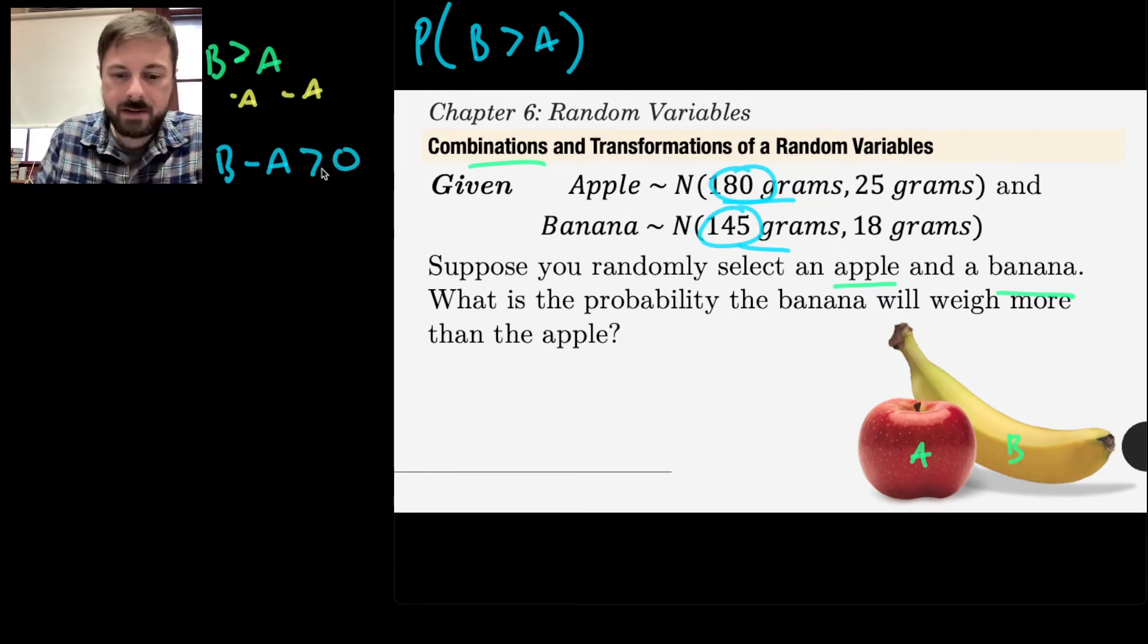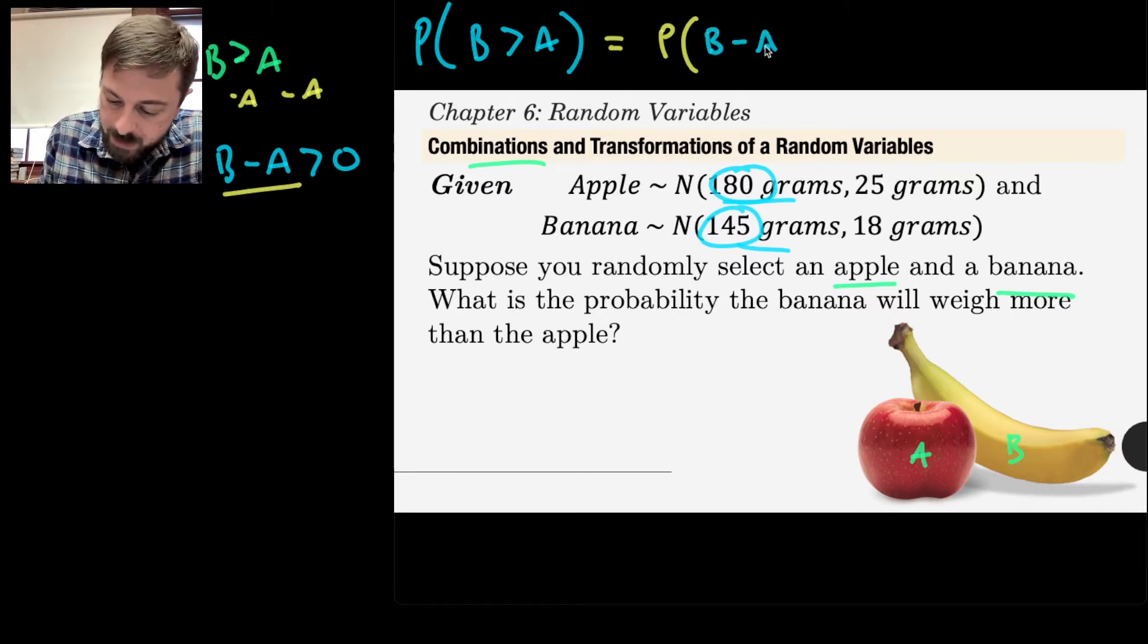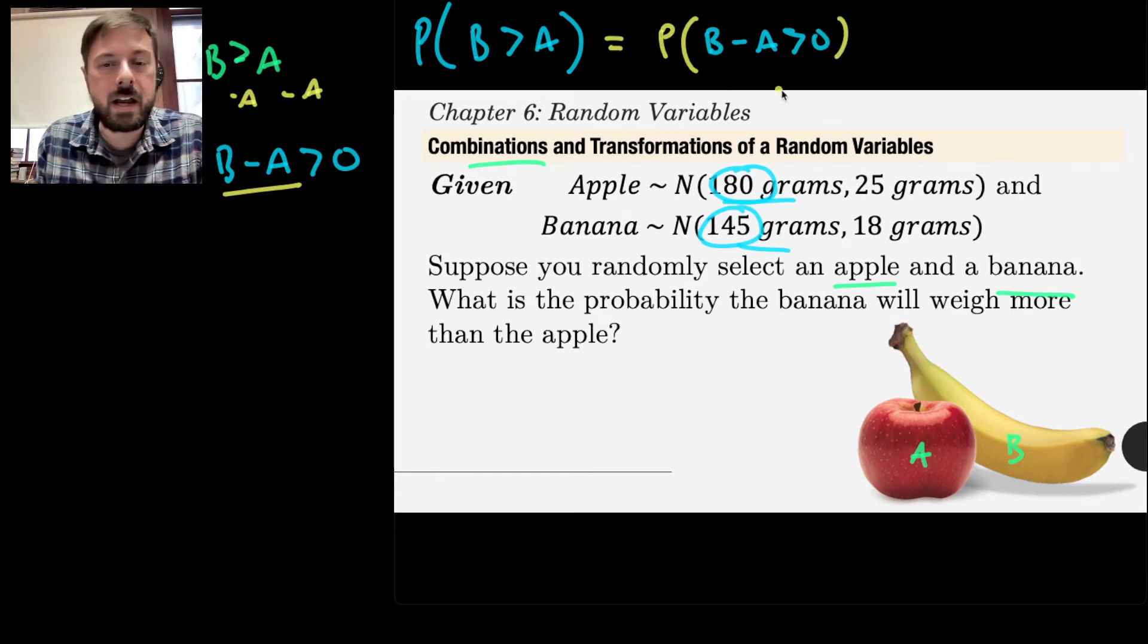Now this starts to become something that we can deal with, because I can think about the distribution of the difference of two random variables. So this question ultimately will change into the probability that we'll get some B minus A being greater than zero. And so this is what I want to answer. To answer this, I need to understand the characteristics of the distribution of B minus A.